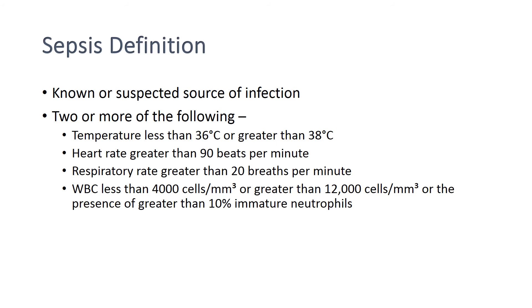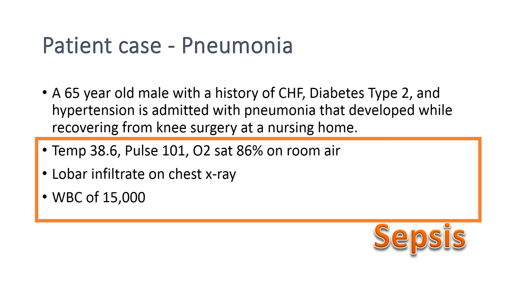Are you missing anything? Think about sepsis. Sepsis requires a known or suspected source of infection and two or more of the following: a temperature less than 36°C or greater than 38°C, a heart rate greater than 90, a respiratory rate greater than 20, or a white blood cell count less than 4,000 or greater than 12,000. Admittedly there are newer definitions of sepsis, but this is the one that Medicare currently accepts. This patient does have sepsis given their elevated temperature, pulse of 101, lower lobe infiltrate on chest X-ray, and a white blood cell count of 15,000.